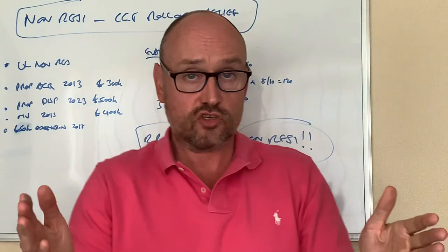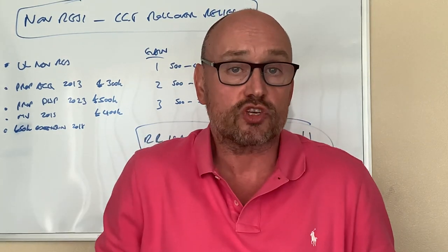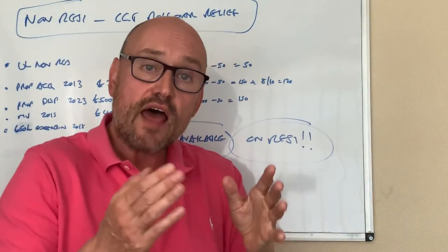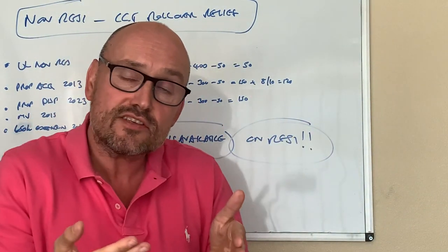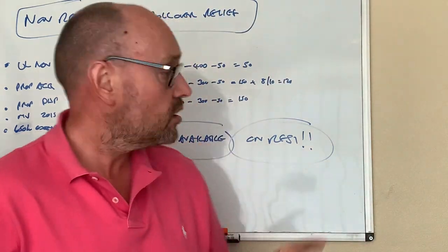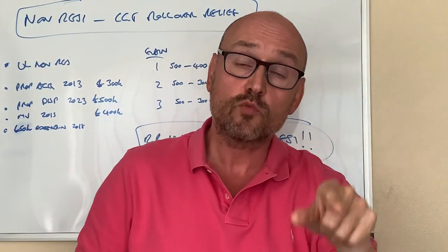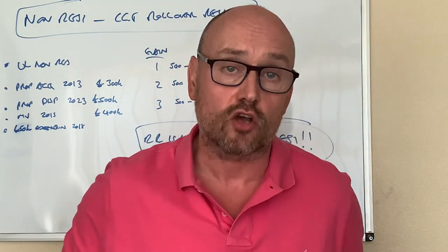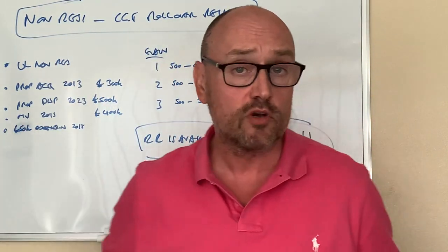The second option is to just take the gain from what you sold it for compared to what you bought it for, less any enhancement expenditure, and time apportion it. In option number two: sold it for £500k, bought it for £300k, spent £50,000 doing it up — that's a £150,000 gain. Then it's the years since 2015 that we care about, which is eight years over the 10 years of full ownership — that's £120,000. So straight away, that's more than double option one, so you wouldn't do that. Option three is even worse — it just says what's the full gain, never mind any time apportionment. The gain is £500k less £300k less £50k, which is £150,000. The only reason you would do option three is if the numbers were different and you sold at a loss. But in this case, on these numbers, you go with option one and you've got a £50,000 gain.